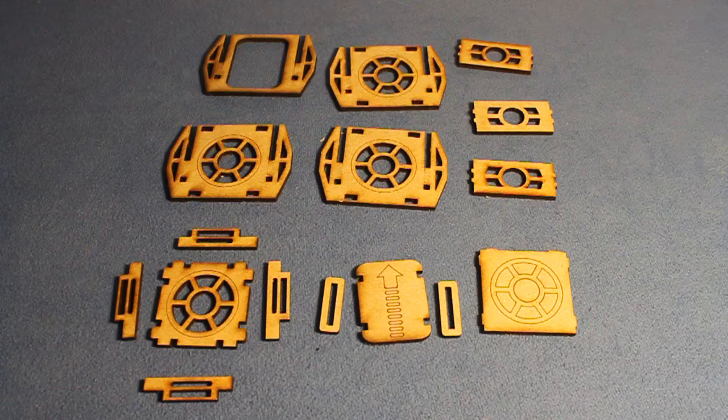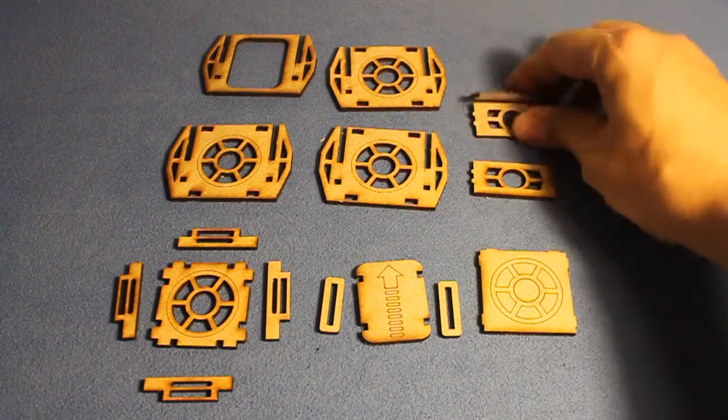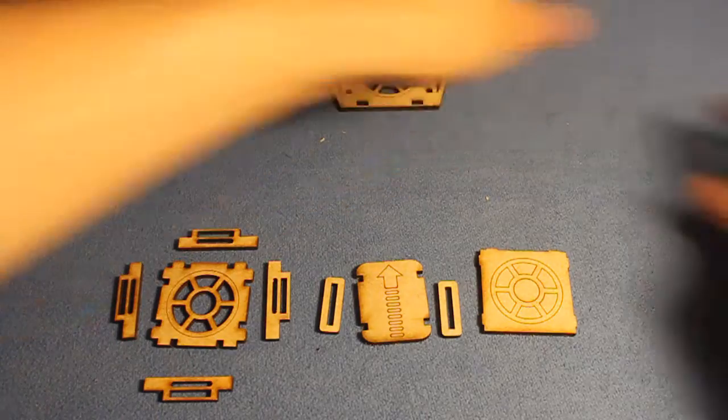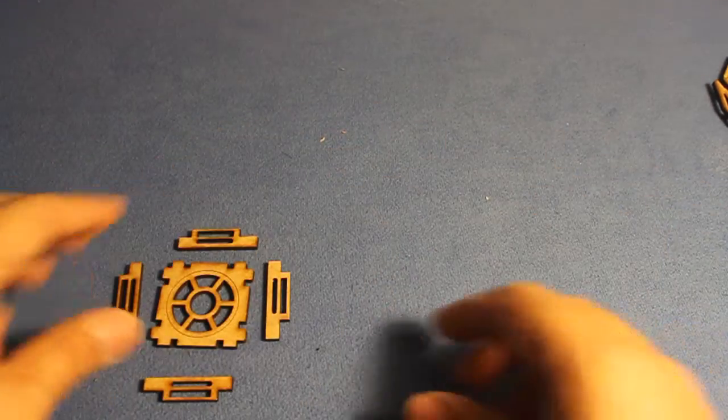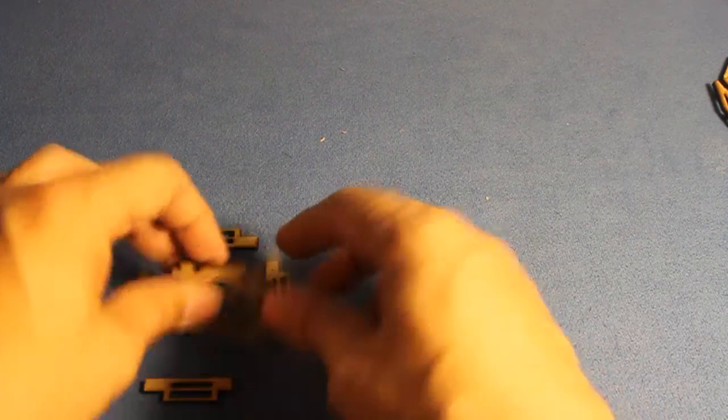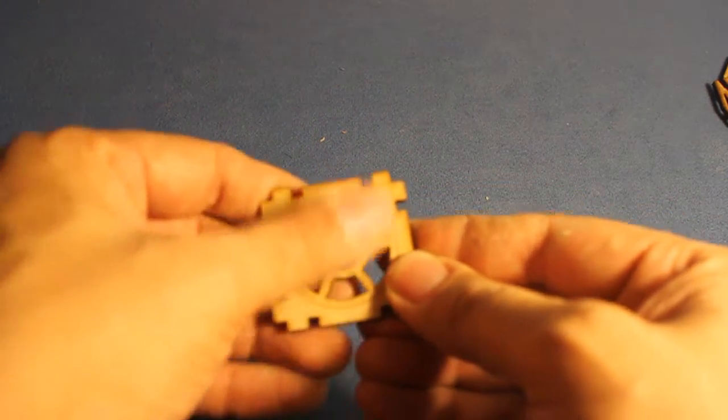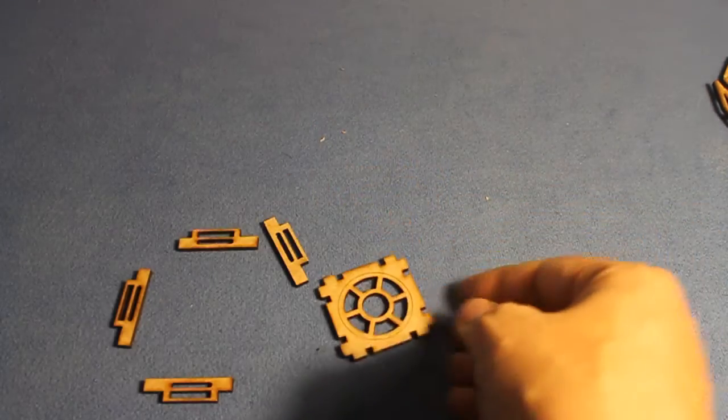Alright, let's get started. Let's move this stuff out of the way. Okay, we're going to start with the roof, the simple part. Now, when you purchase the kit, all the holes have already been popped out, but it does come like this.